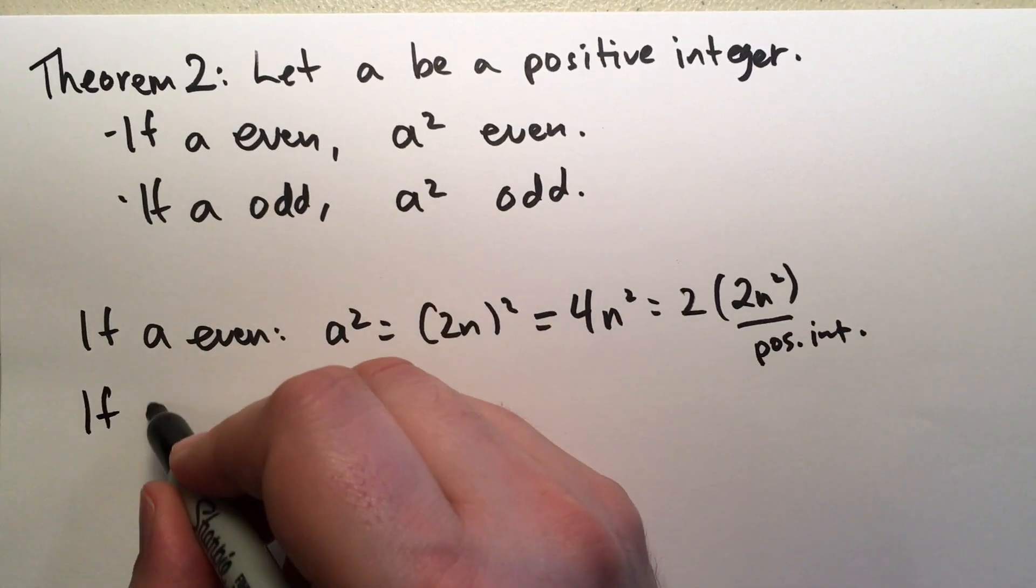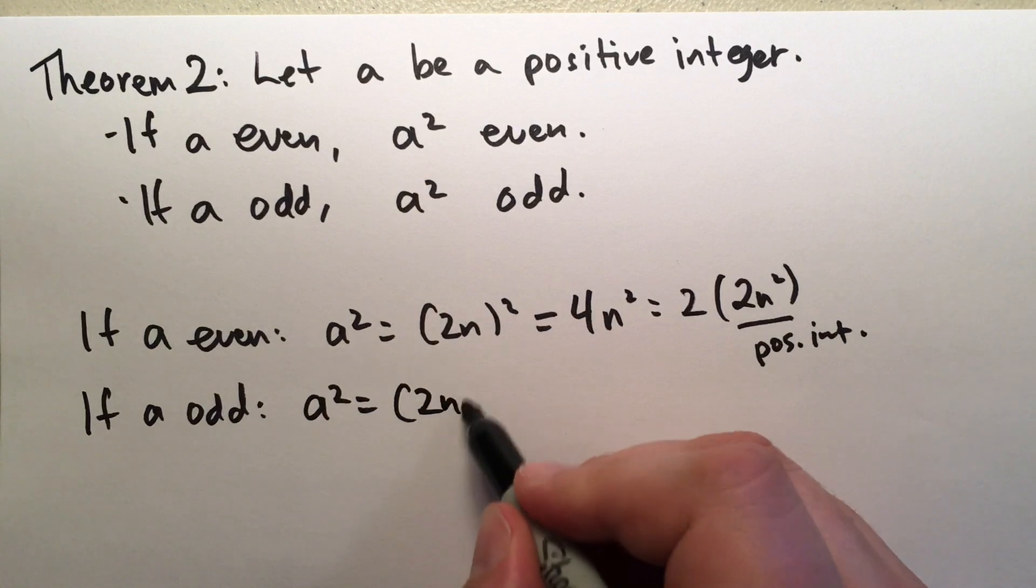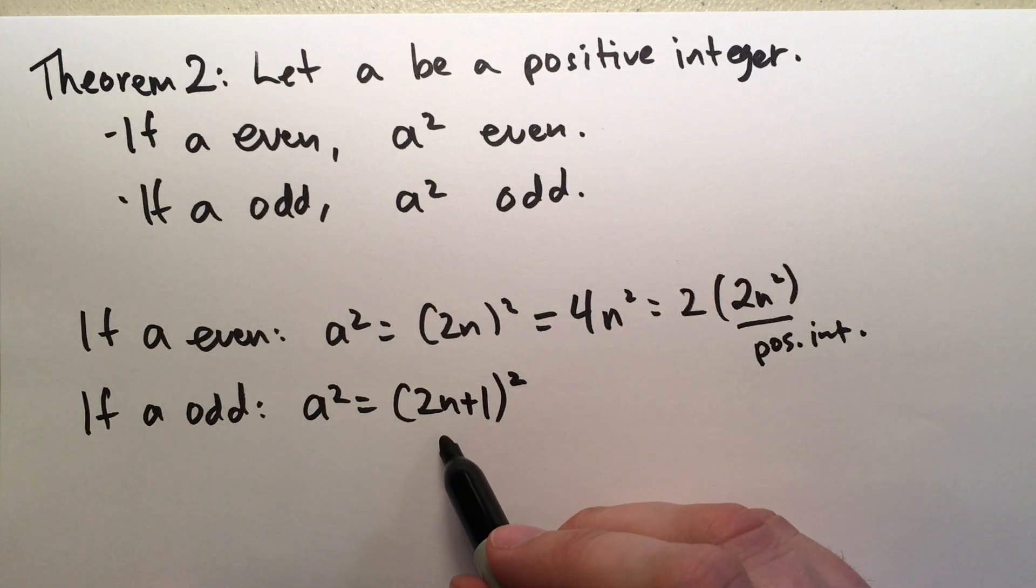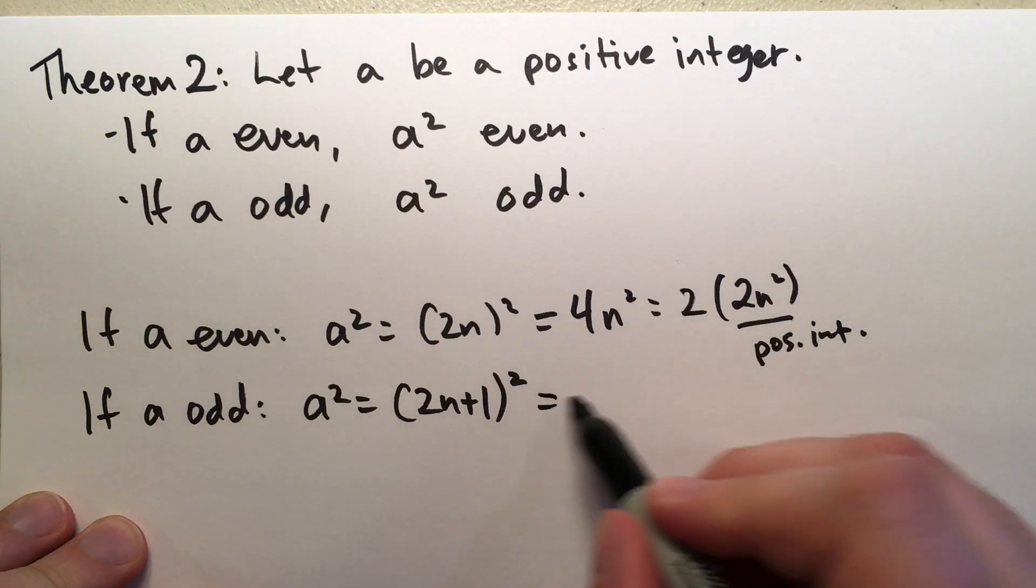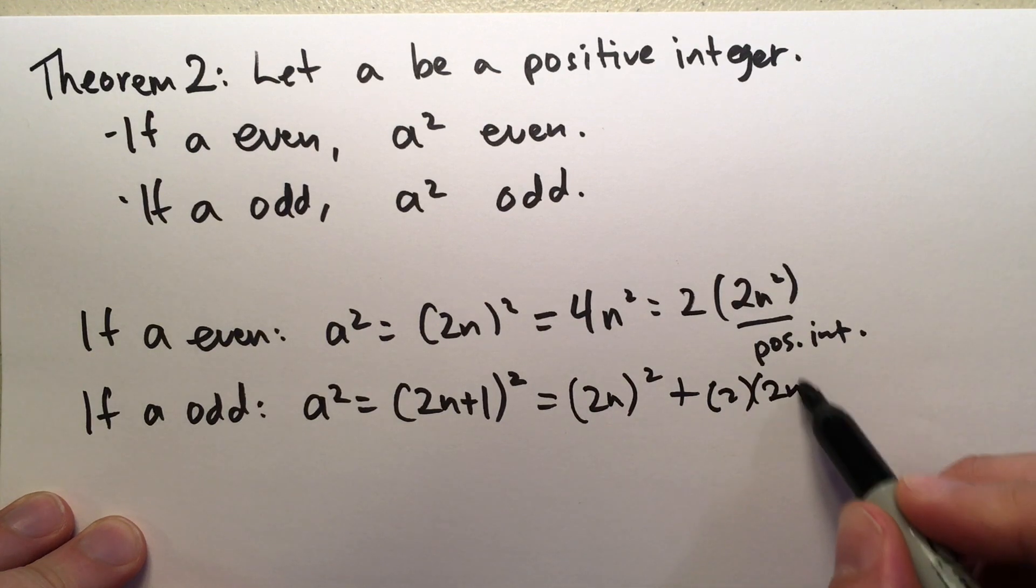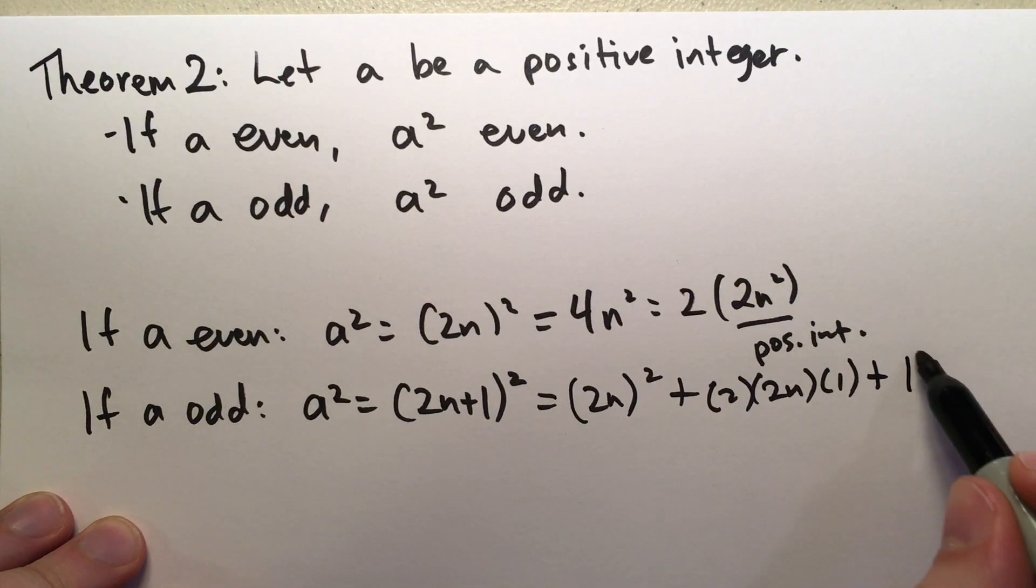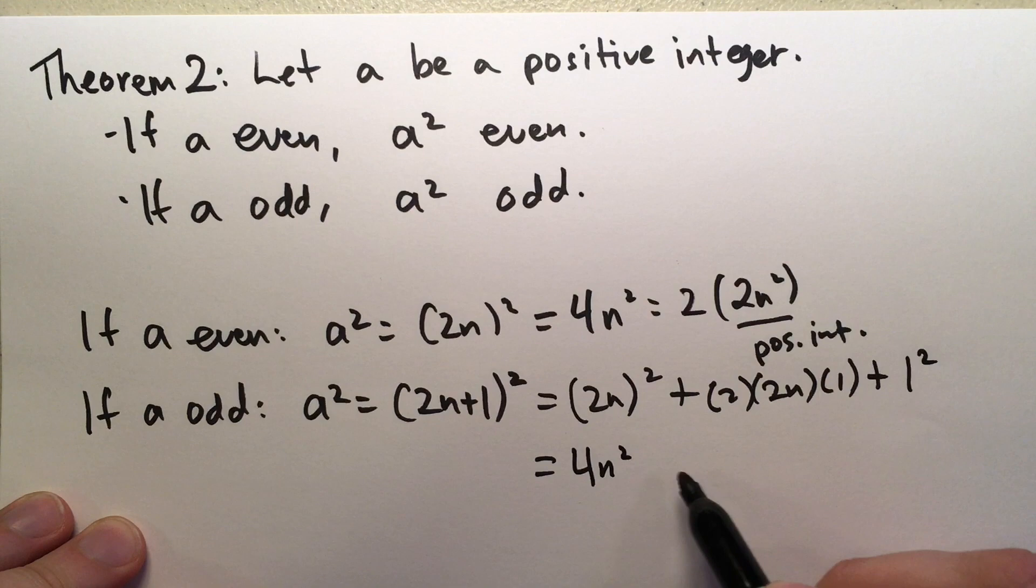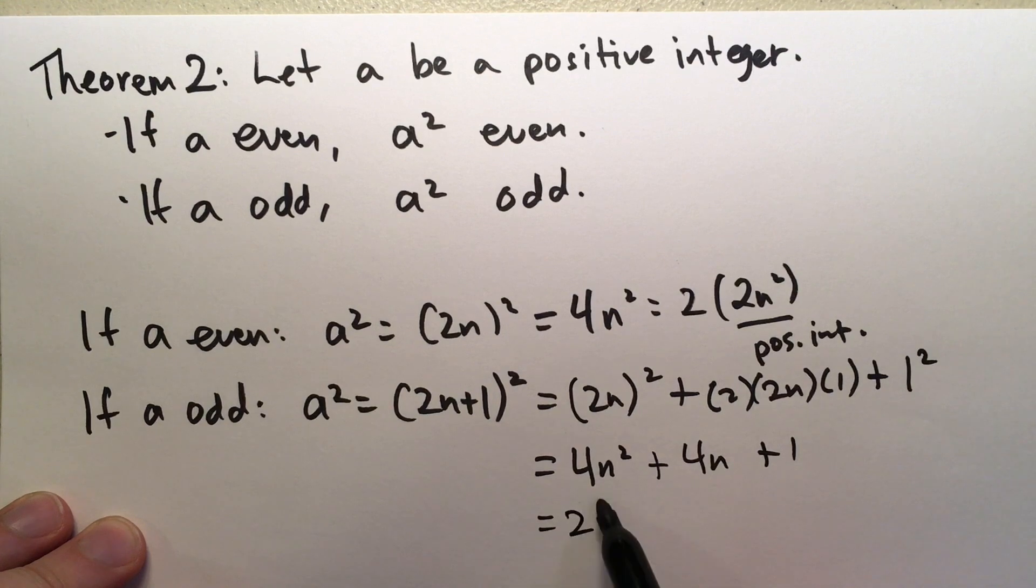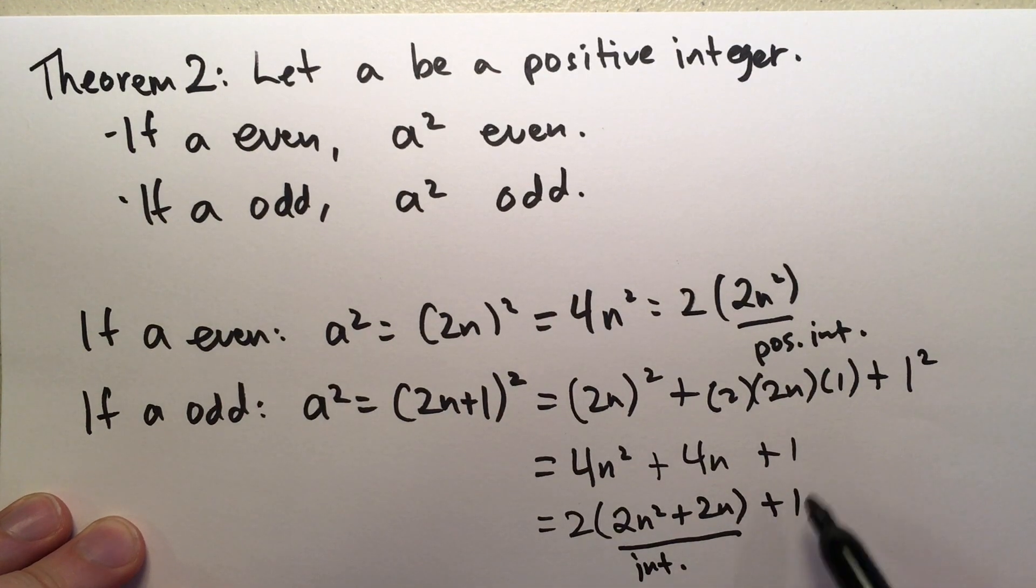And if A is odd, we'll have to work a little harder for this one. A squared is going to be 2N plus 1 squared. This time N is natural, it's not positive, which is going to be 4N squared plus 2 times 2N times 1, that's the 2AB part of A plus B squared, and then finally plus 1 squared, which is 4N squared plus 4N plus 1. And we note that we can factor out a 2 here. We note that this is an integer, and so we get 2 times some integer plus 1. Therefore, it's odd.